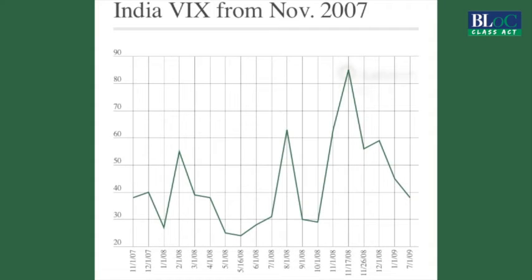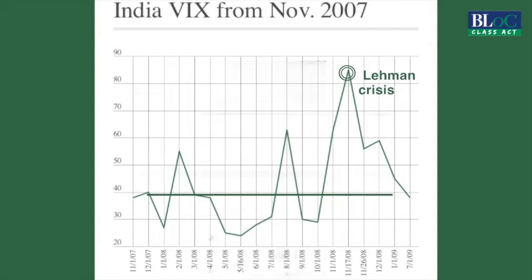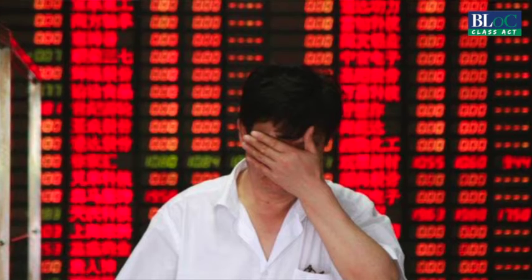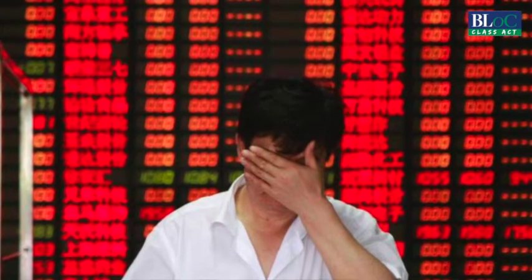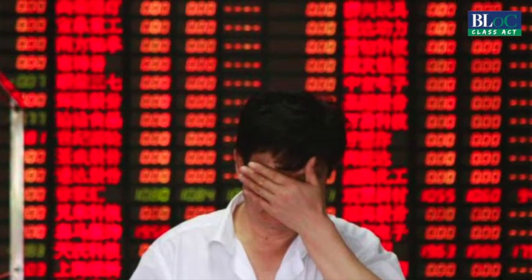After that huge spike in November 2008, the index cooled rapidly and fell to levels of 40 or so by the end of the year. Thereafter, there were minor blips during the Mumbai terrorist attacks and other events like that, but it has never gone to 80-plus levels again. When we went through the Chinese stock market collapse in August 2015, the India VIX saw another bout of gyrations, spiking to 35 or so.